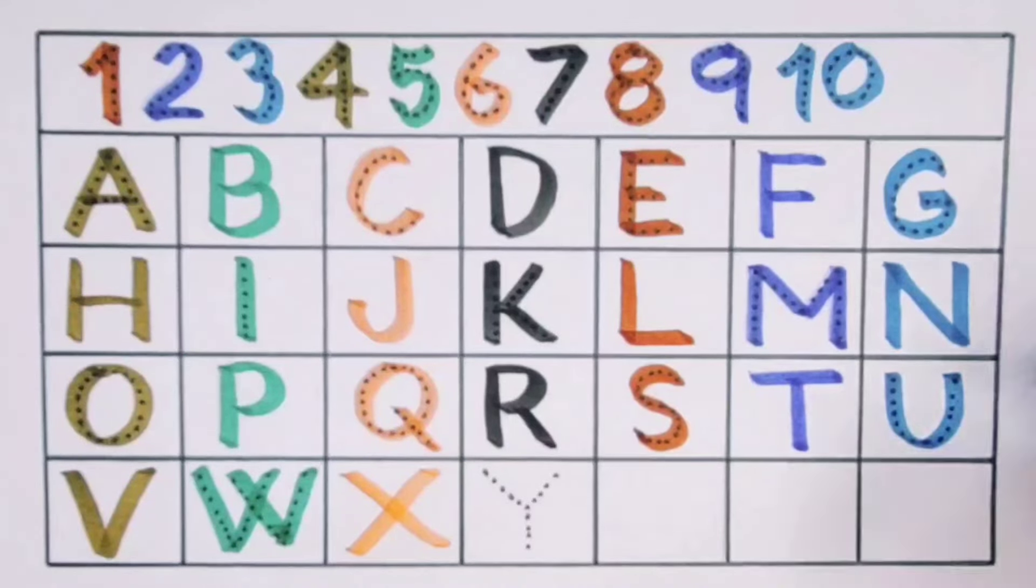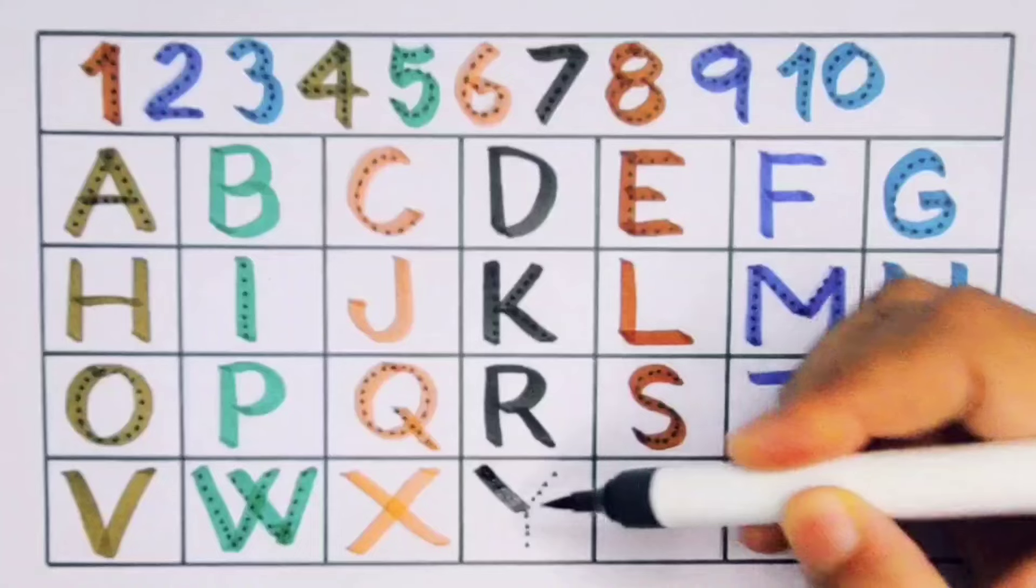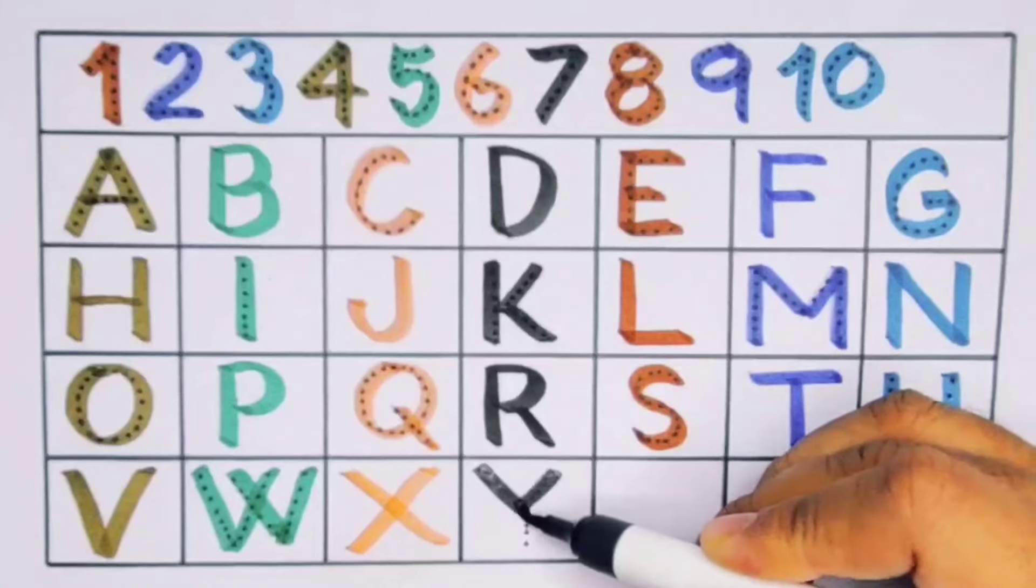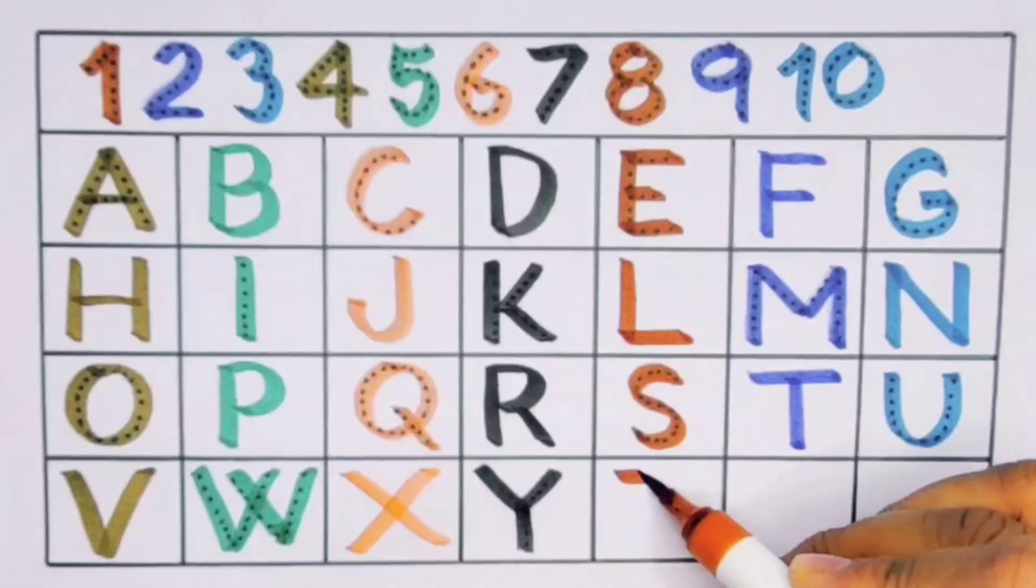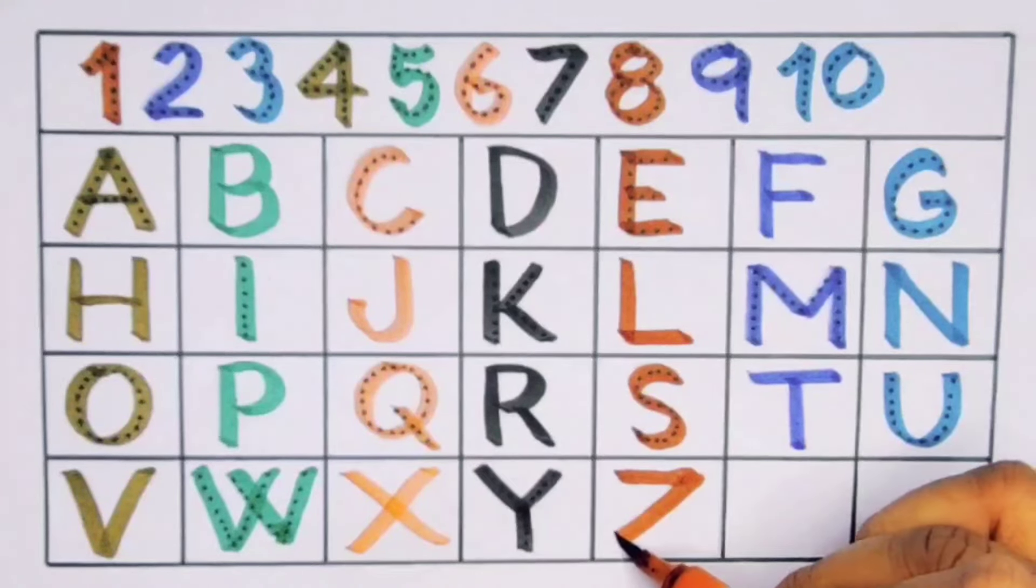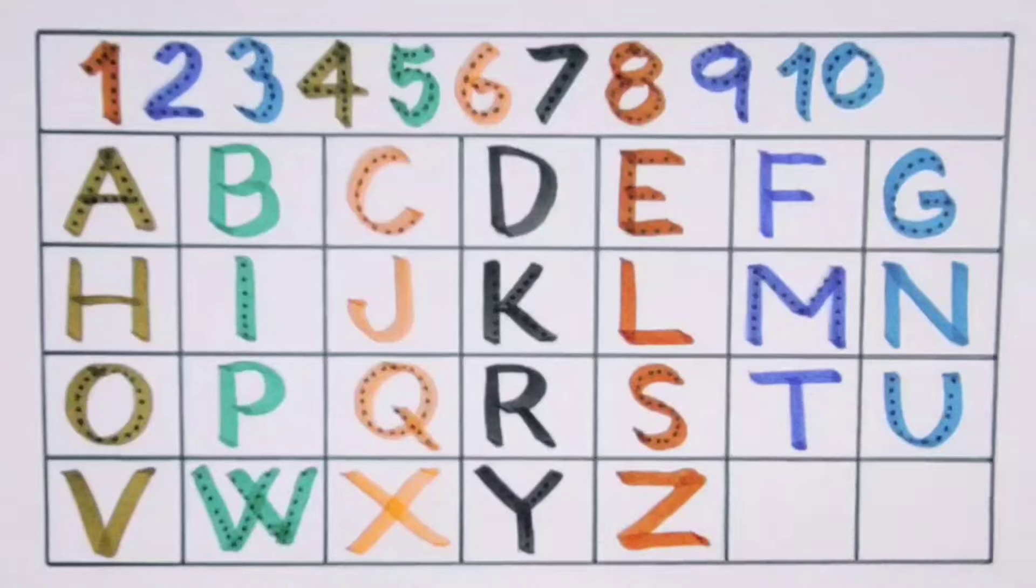Next kids is Y, Y for Yolk. Next, Z, Z for Zebra. What we learn.